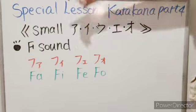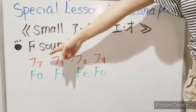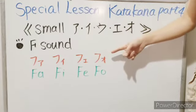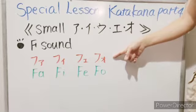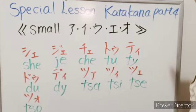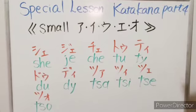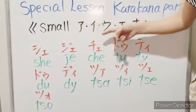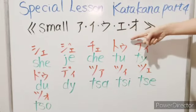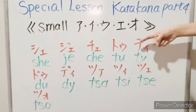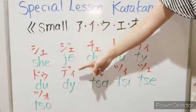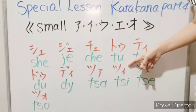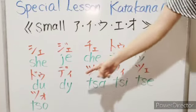Next is the F sound: fa, fi, fe, fo. Besides these sets, there are also a few more sounds you need to study: che, tu, ti, du, di, sa, ti, se, zo.